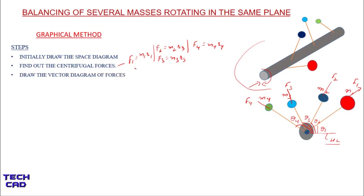In the next step you have to make the vector diagram of the forces. After finding out the centrifugal forces, the direction of each force is given according to the space diagram. For the vector diagram, start from point A and draw force F1 with magnitude m1·r1. The direction of this line is parallel to F1 in the space diagram — you can use a roller scale or the angle theta1 with a protractor.